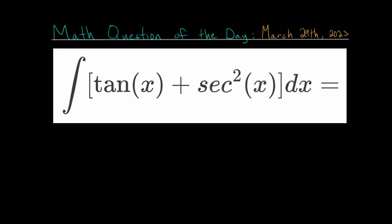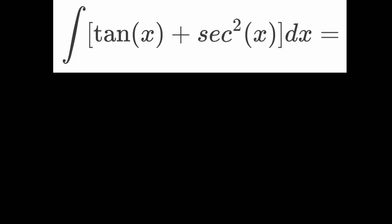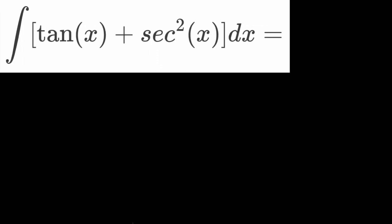Now, assuming that you have at least attempted the problem, let's start working through it. And if you do have suggestions for future questions of the day, feel free to leave those as comments. When dealing with an integral, one way to interpret this is that we're looking for the function whose derivative is the tangent of x plus the secant squared of x. In reality, we're looking for a class of functions because we will have some arbitrary constant added to it, because when we differentiate a constant, that's just equal to zero. Remember that when taking the integral of a sum, we can take the integral of each piece individually.